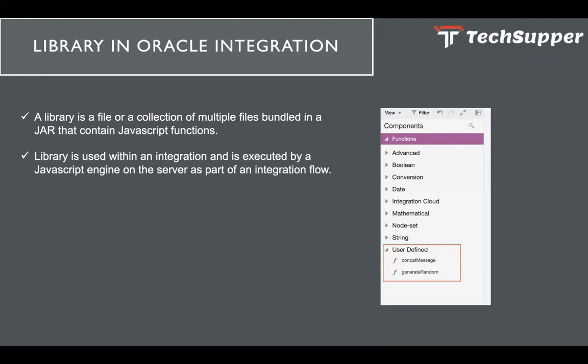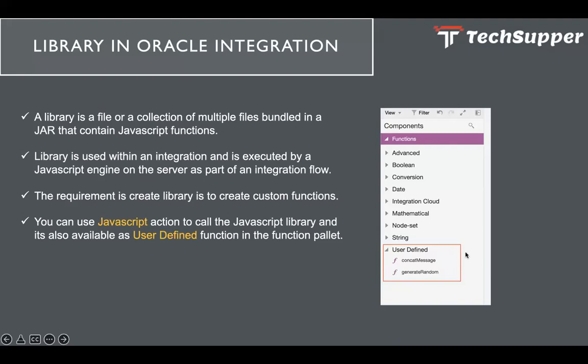A library is used within an integration and is executed by a JavaScript engine on the server as part of an integration flow. When you use that JavaScript in an integration, it will be parsed by the JavaScript engine. You pass the input parameter and will get the output. When you create a function, that function will be visible as a user-defined function in the mapper, and you can call those functions via the JavaScript action.